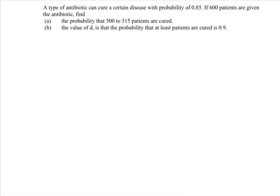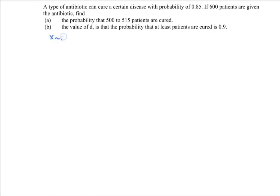Hello everyone. In this video I'm going to discuss the example for special probability distribution. A type of antibody can cure a certain disease with the probability of 0.85 if 600 patients. Here we have the binomial distribution where n=600 and p=0.85 can cure the disease. Find the probability that we have 500 to 515.